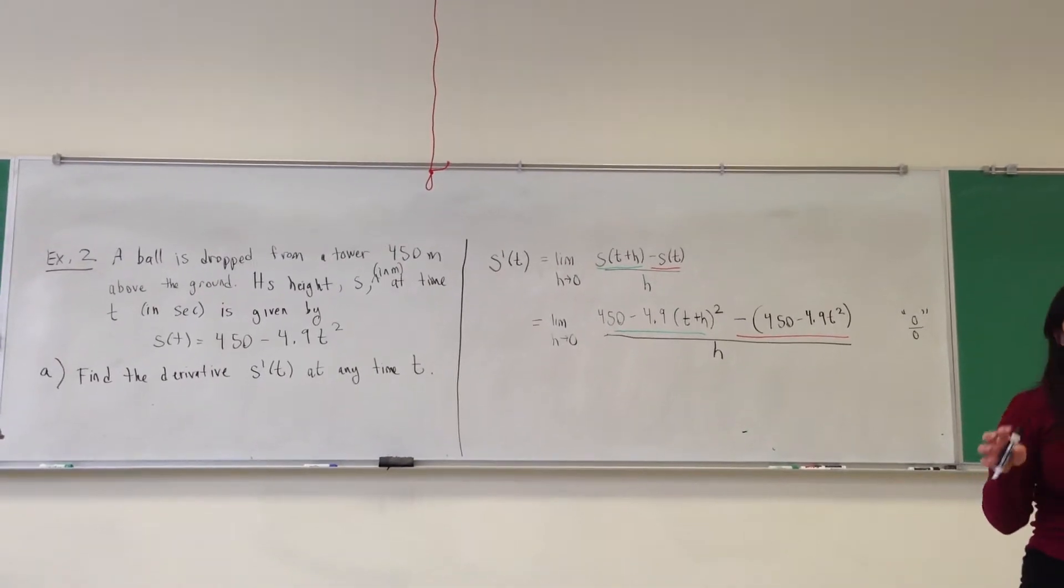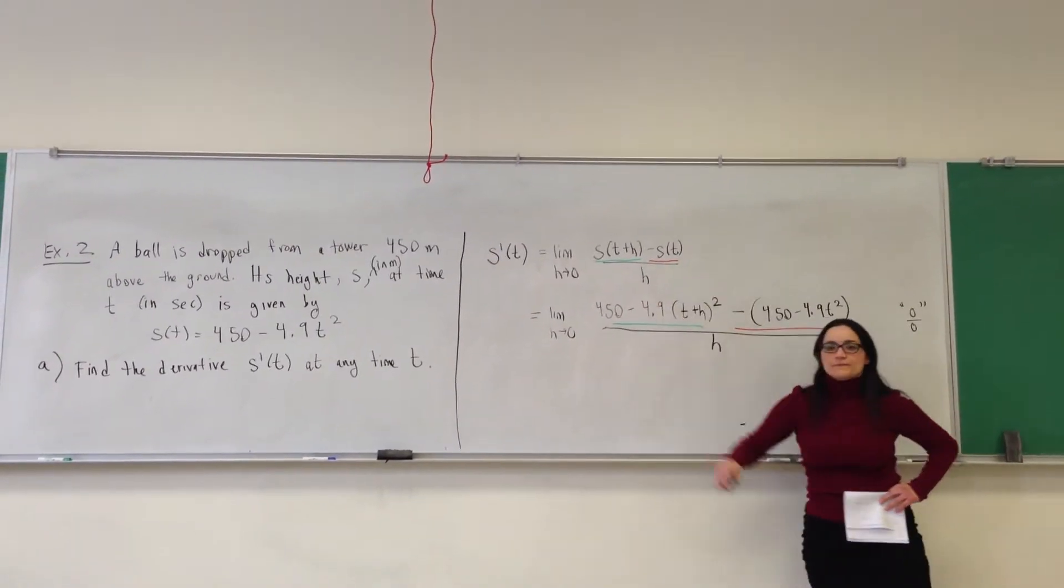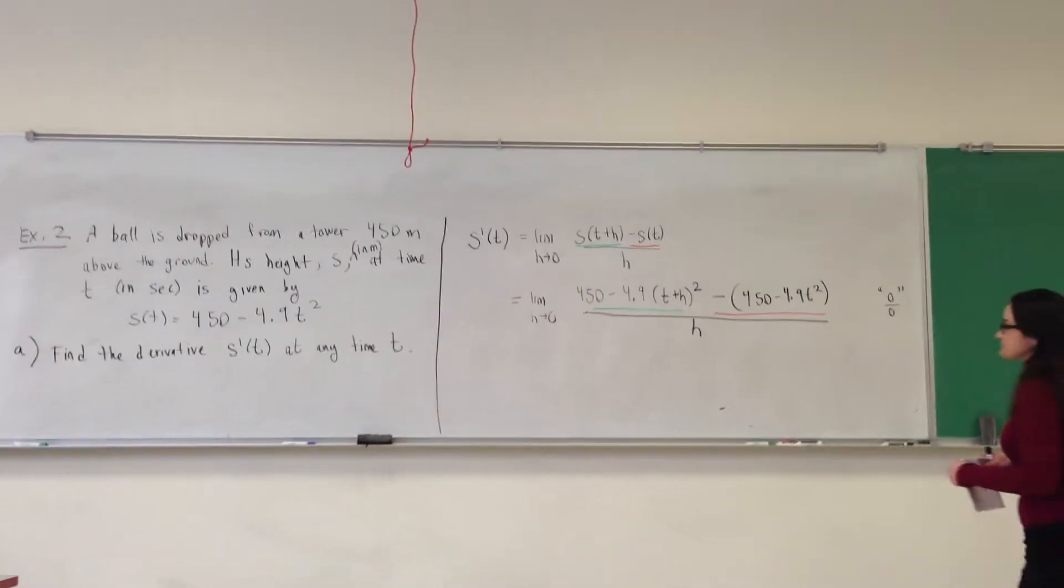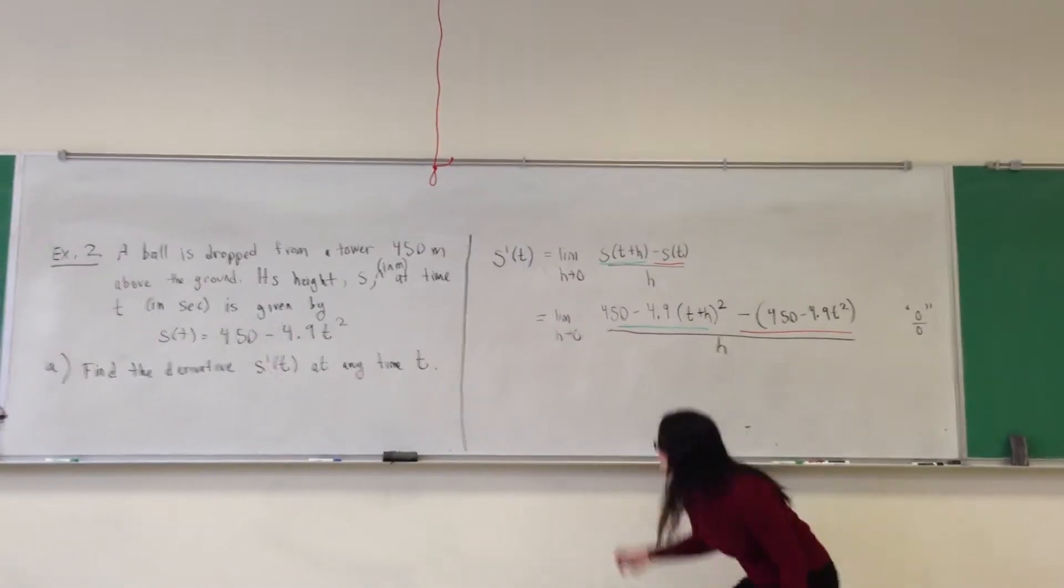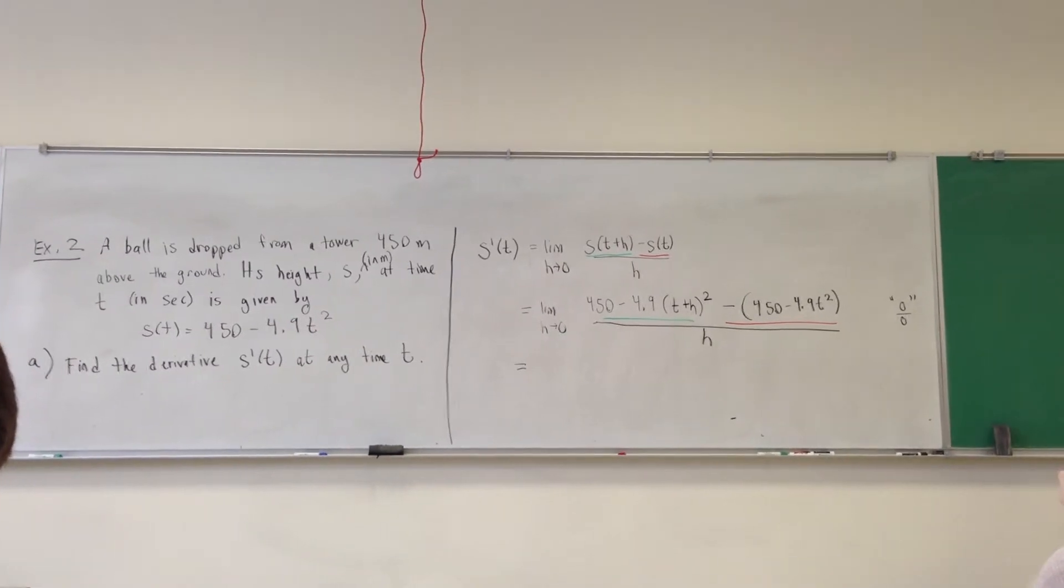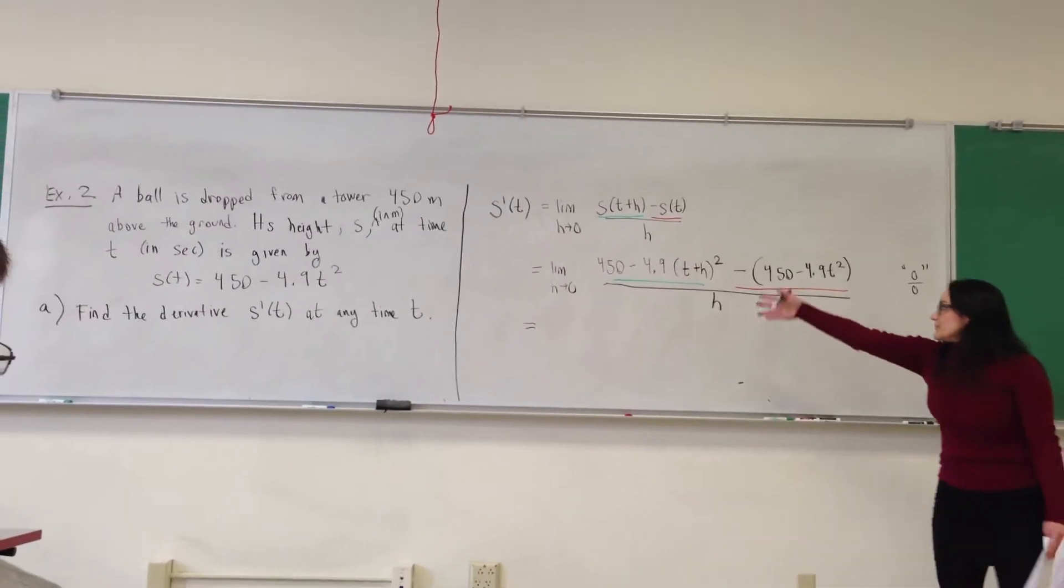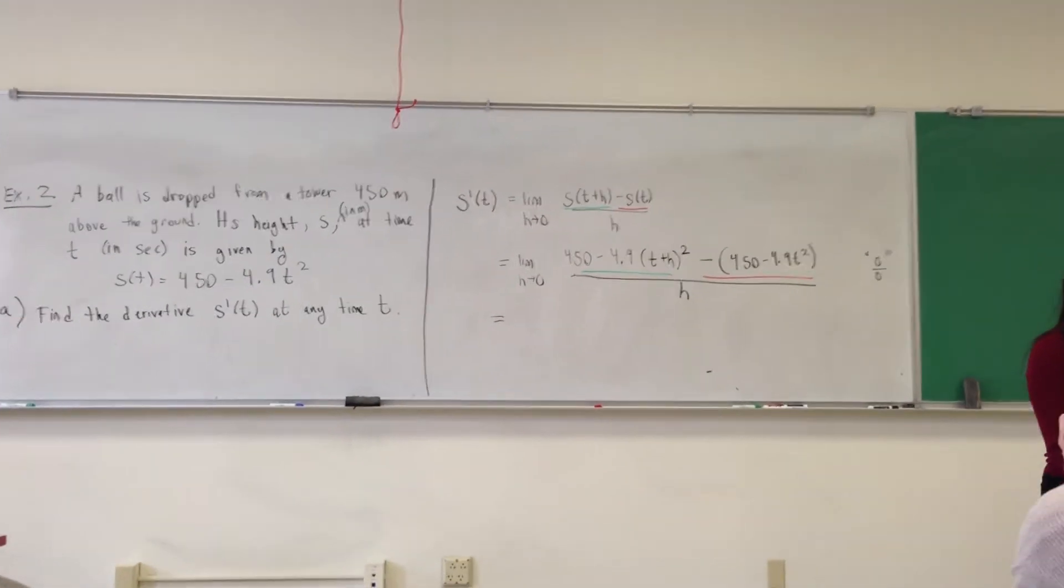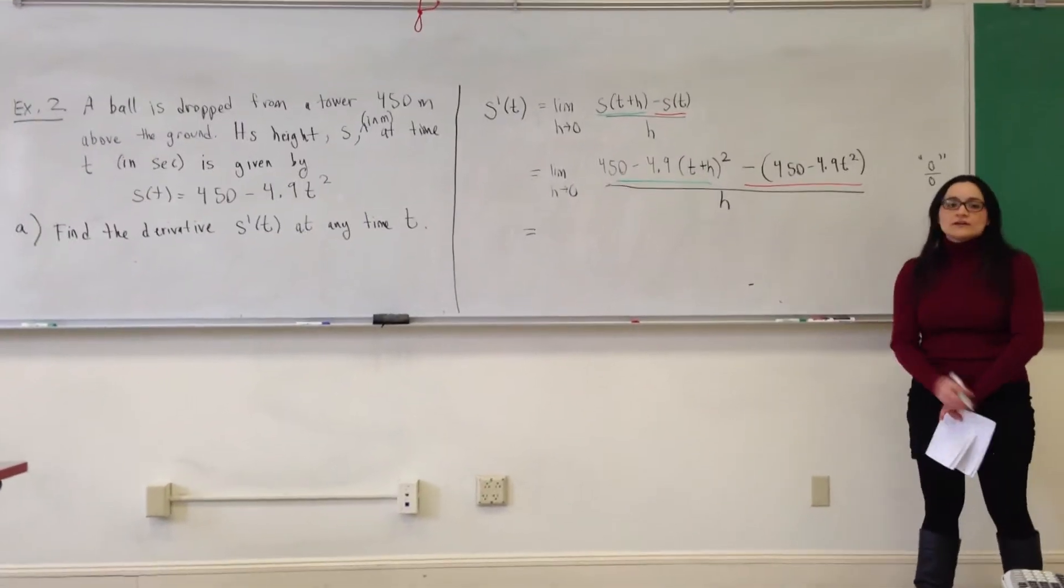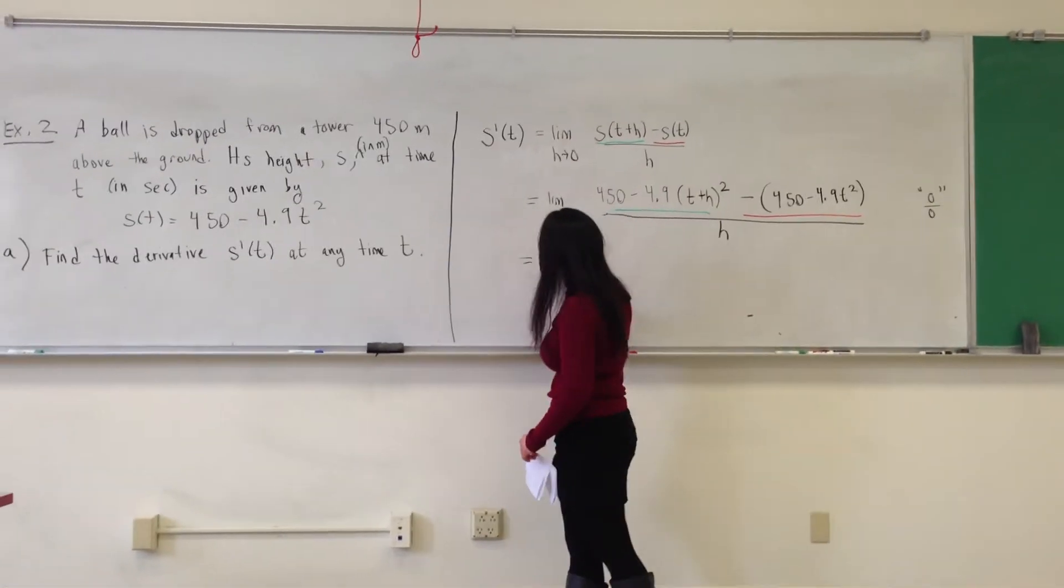So what we hope is that the zero over zero is going to cancel out. That we have a removable discontinuity of this difference quotient. So this is, we just have a quadratic, quadratic terms in the numerator. Maybe just simplify and combine some like terms. So do what I can in the numerator. So this is the limit as h goes to zero.